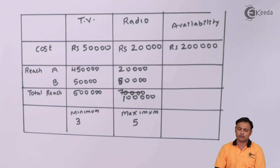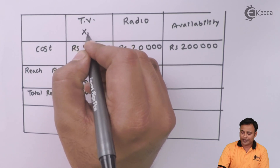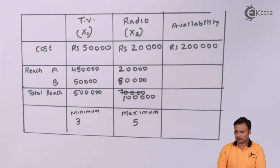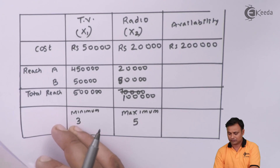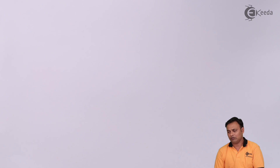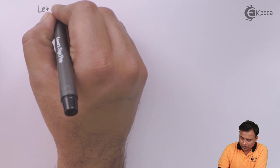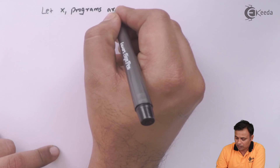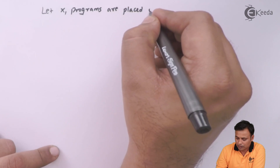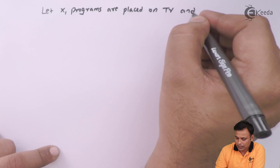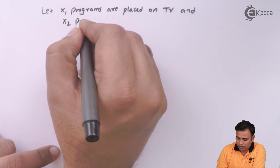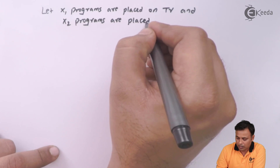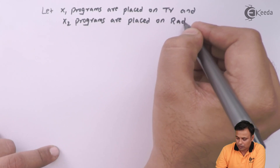Now the next step is formulation. We will assume that X1 programs are placed on TV and X2 programs are placed on radio, and then we will proceed further.